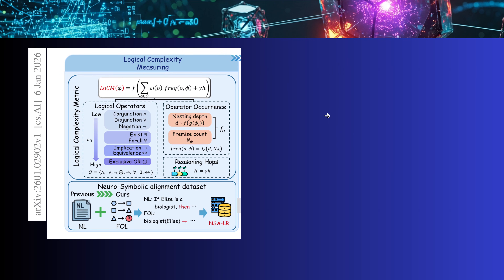So the first step is to measure the logical complexity of a particular task using this formula: we have the logical operators, their occurrence frequencies, and the number of reasoning hops. Now comes an interesting part — they say let's combine this with natural language, but already within a neural symbolic alignment dataset.